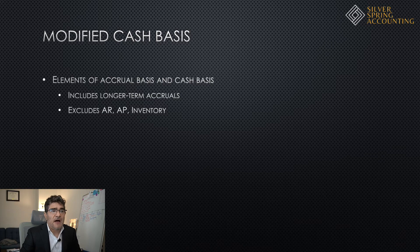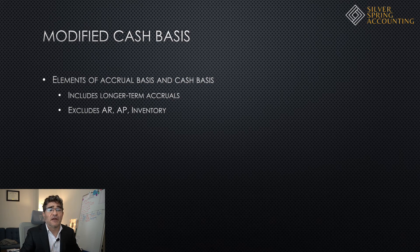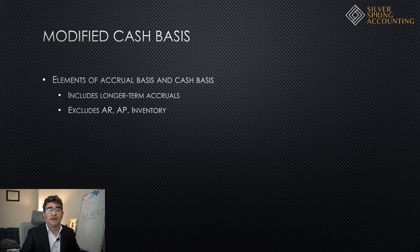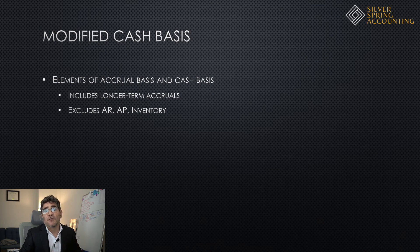Modified cash basis combines elements of both accrual and cash basis accounting. Generally, you won't see accounts payable and accounts receivable, but you will see additional items like debt, fixed assets, and their associated depreciation and amortization. Short-term accruals are still absent — no AR, no accounts payable, and often no inventory.